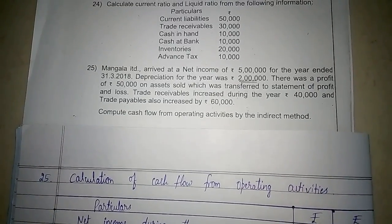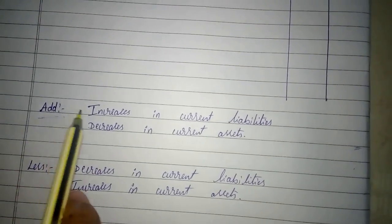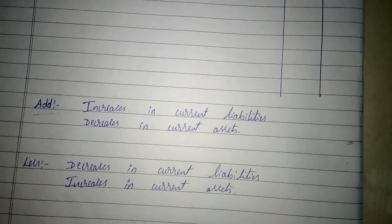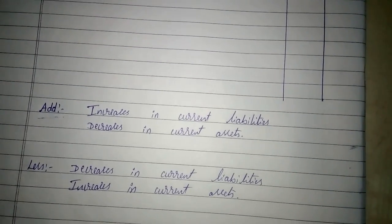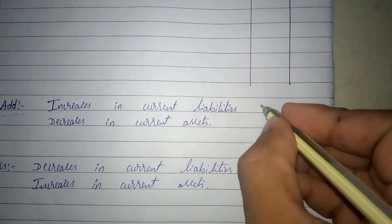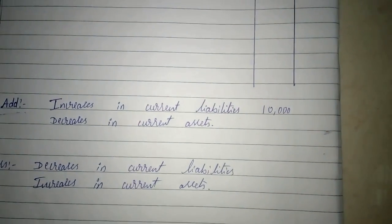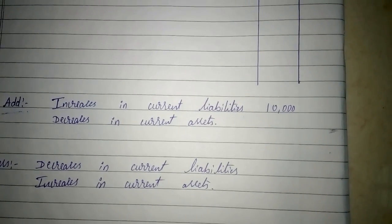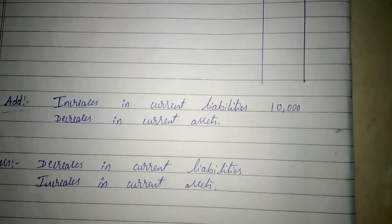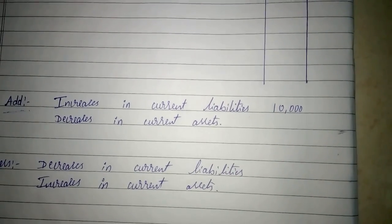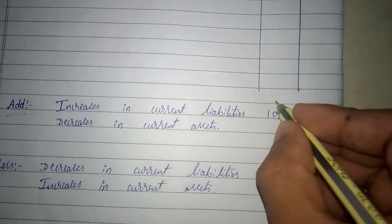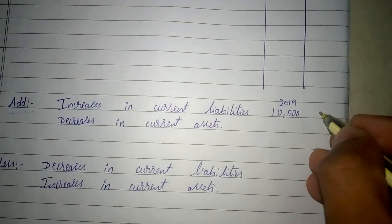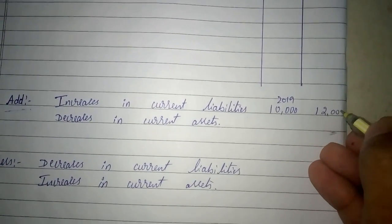Let me give you a simple example. If the current liability — say creditors or bills payable or trade payables — was 10,000 in 2019 and 12,000 in 2020, that means there is an increase of 2,000 in current liability. An increase in current liability means you add it.